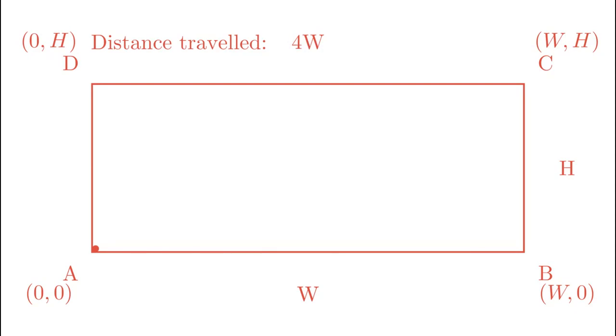So no matter the corner, if it hits one, its distance travelled in horizontal direction must be a multiple of W.